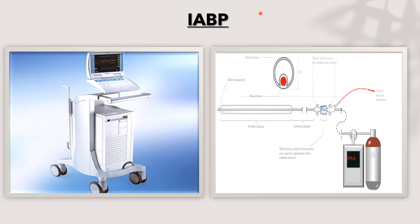The anatomy of an intra-aortic balloon pump consists of two main parts: the part inside the human body — the catheter itself — and the console outside the body. The lower part of the console contains the battery and helium cylinder. The catheter itself also has two parts: the portion inside the body and the portion outside, starting from the fixation point. The catheter is connected to the helium cylinder, which inflates the balloon.